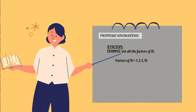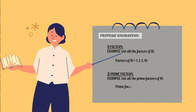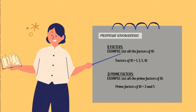You also learned about prime factors. For example, list all the prime factors of 10. From the listing just now, you can find the prime numbers. So, prime factors of 10 equal to 2 and 5. This is the previous knowledge you have learned in our previous video.